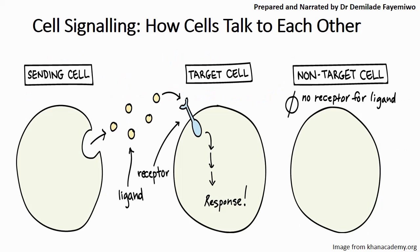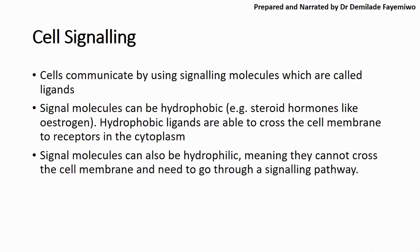How do cells talk to each other? A sending cell sends out a message in the form of a small molecule called a ligand. The ligand travels to the target cell, which has a receptor — in the form of a glycolipid — on its cell membrane. The ligand binds to that receptor, and as a result the receptor transmits the message from outside into the cytoplasm, causing a response. Signal molecules can be hydrophobic, like the steroid hormone estrogen, and hydrophobic molecules are able to cross the cell membrane. More commonly, however, signal molecules are hydrophilic, meaning they cannot pass through the membrane and must use a different signaling pathway.